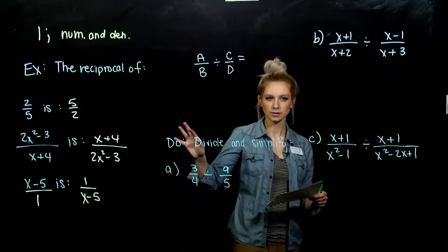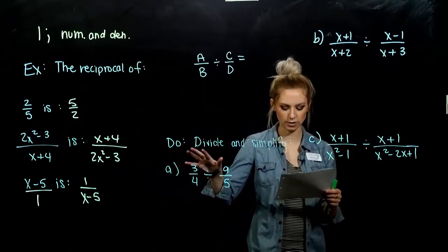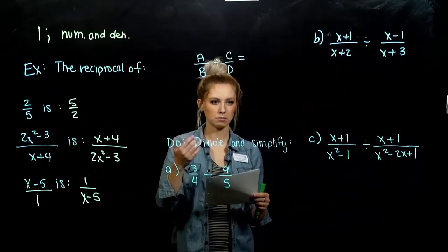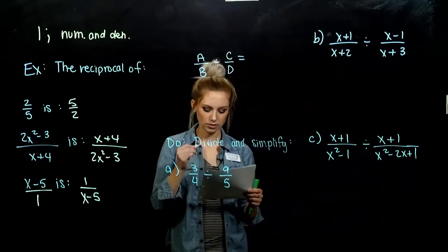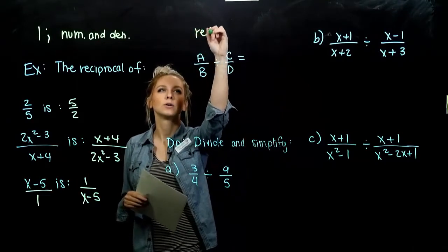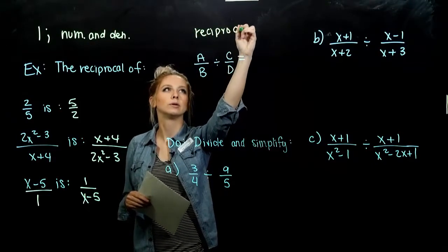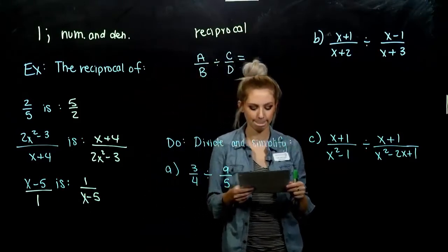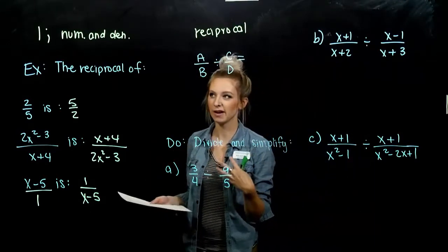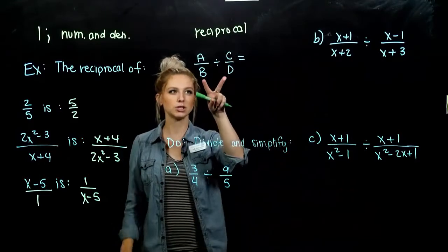So we use that to actually divide rational expressions. Because division is really like multiplication. So to divide a rational expression, we multiply by its reciprocal. Because division is really like multiplying by the reciprocal. We saw that in the beginning of the class.